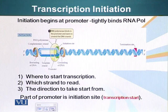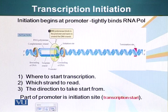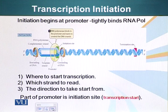RNA polymerase is the molecule that will make the RNA, and it binds a specific region of DNA — the promoter. Next to the promoter are genes whose RNA will of course be used to make proteins.